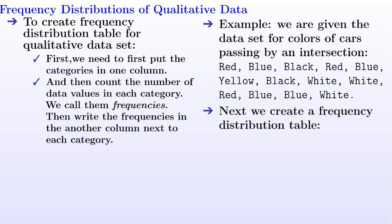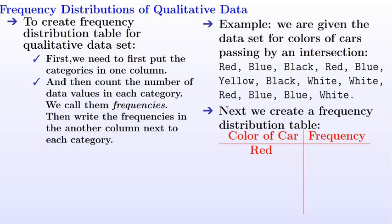We create a frequency distribution table with one column for color of car and another column for frequency. The colors of cars are red, blue, black, yellow, and white. Looking at the data, there are three red cars and four blue cars that passed by the intersection.